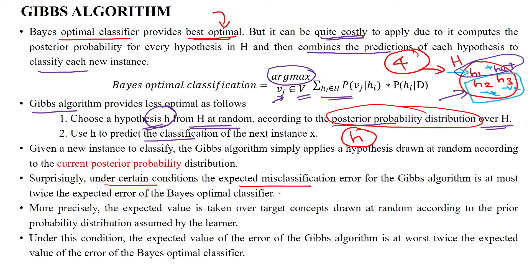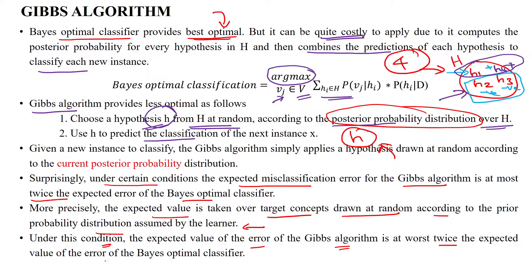Surprisingly, under certain conditions, there is the possibility of misclassification due to selecting a single hypothesis in the Gibbs algorithm. The error can be at most twice the Bayes optimal classifier error. More precisely, the expected value is taken over the actual output label drawn at random according to the prior probability distribution assumed by the learner.